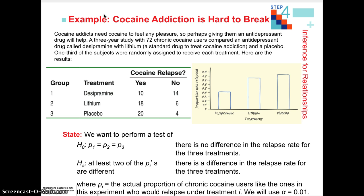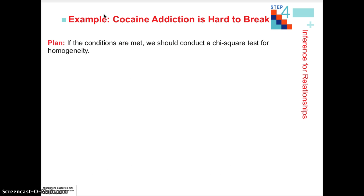We've determined an alpha of 0.01. We use a smaller alpha like 0.01 when it comes to safety, health, or side effects — things that affect people adversely. That's why we see a tighter alpha in this example.